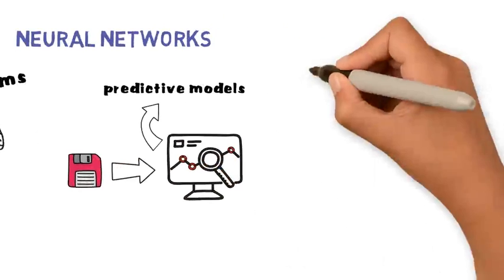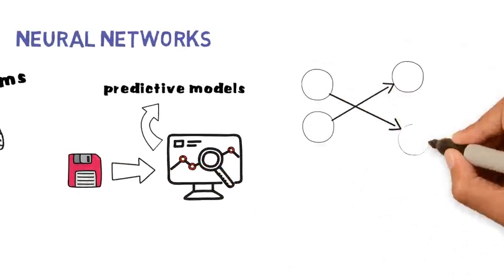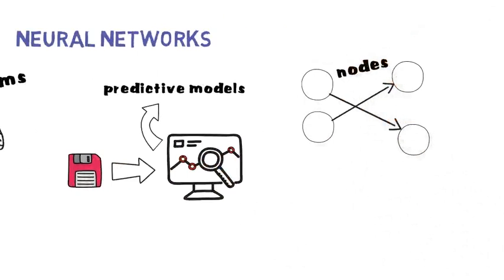Neural networks are made up of small, interconnected processing elements. These elements are called nodes.